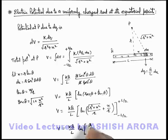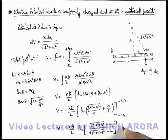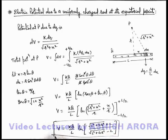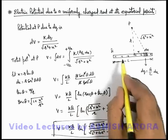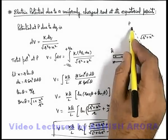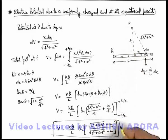So here it can be written as: [√(L² + 4r²) + L] divided by [√(L² + 4r²) - L]. So this will be the final result we are getting for the potential due to a uniformly charged straight rod at equatorial point located at a distance r from its center.